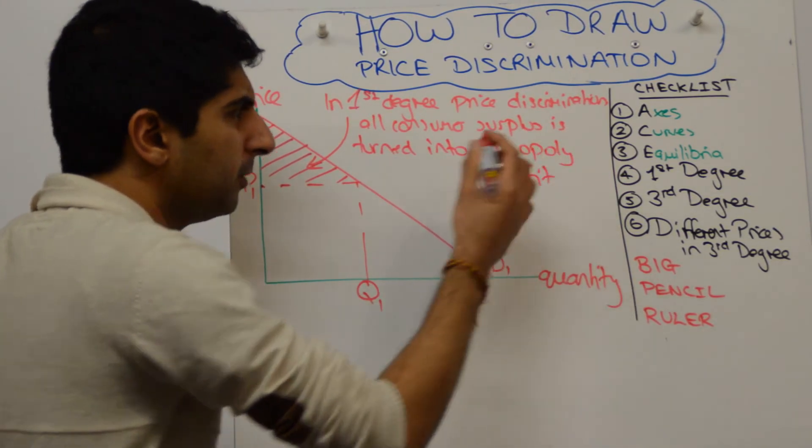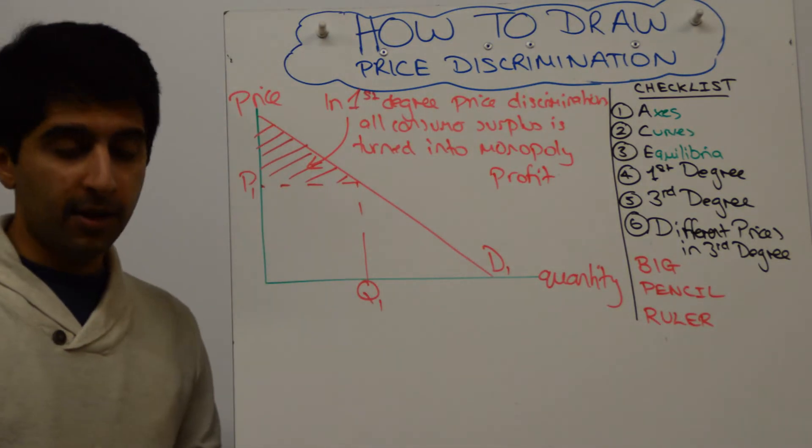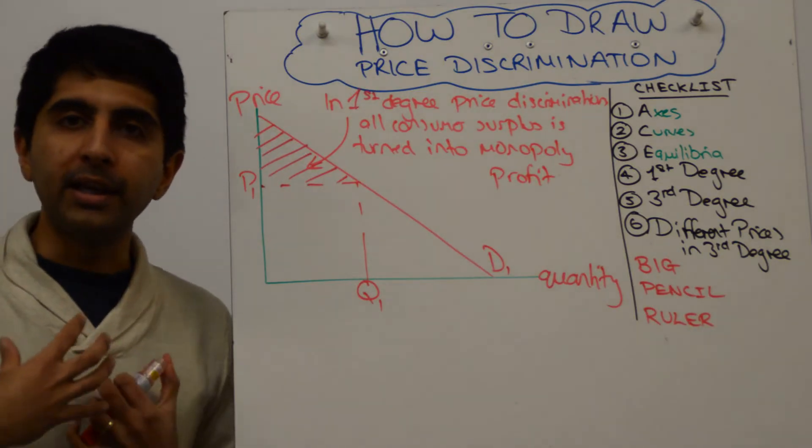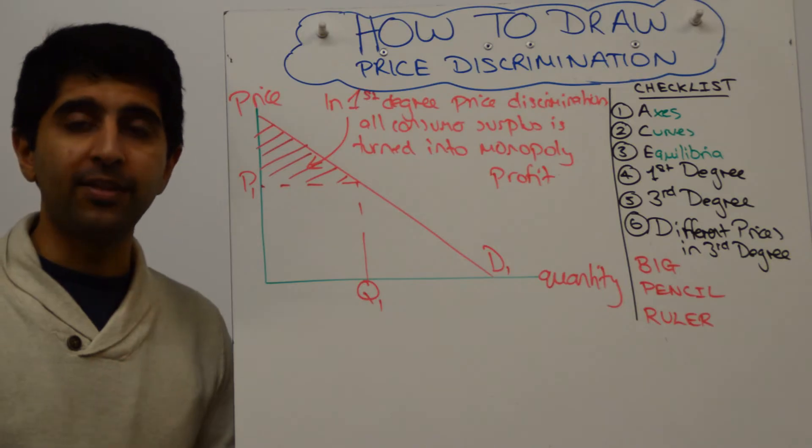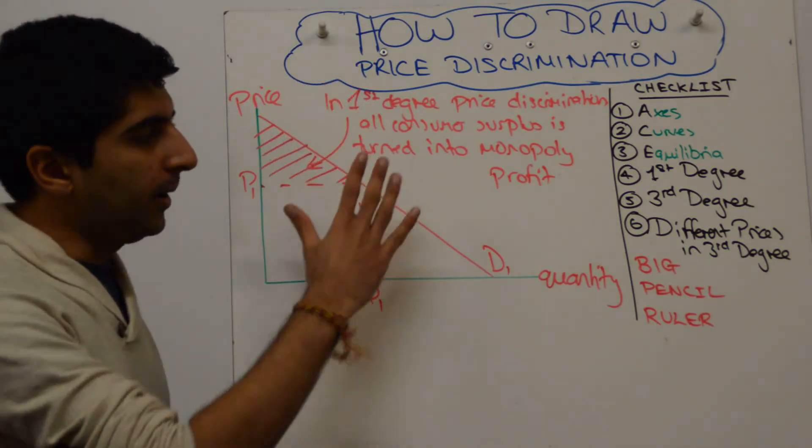So a long label, but an important label. You're kind of putting some analysis in your diagram here. But that's what you've got to say. So all this consumer surplus is turned into monopoly profit by each individual being charged exactly the amount that they are willing and able to pay for a good or service. All right, so that's first degree.